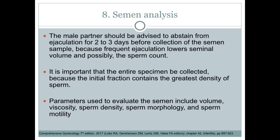Parameters used to evaluate the semen include volume, viscosity, sperm density, sperm morphology, and sperm motility. Motility should be evaluated in terms of percentage of total motile sperm as well as quality of motility — rapidity of movement and amount of progressive motility. Sperm morphology is an extremely important parameter correlated to fertilizing ability. Using strict criteria, only approximately 4% or more of sperm in an ejaculate may be considered normal according to the most recent WHO criteria.